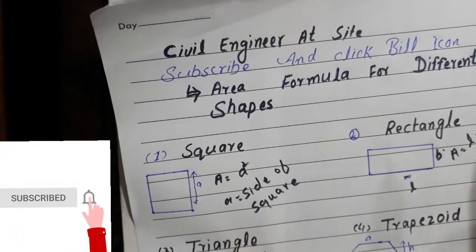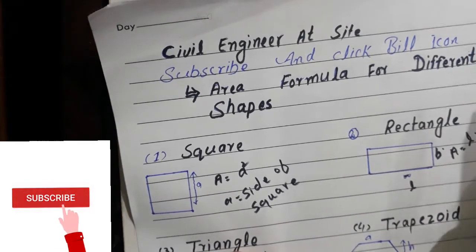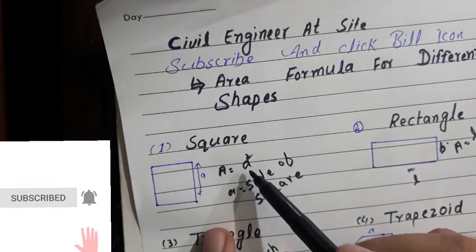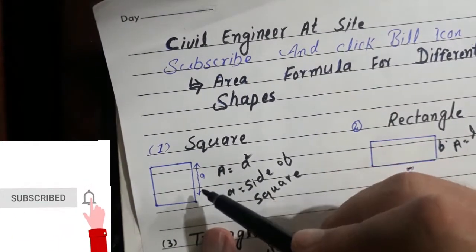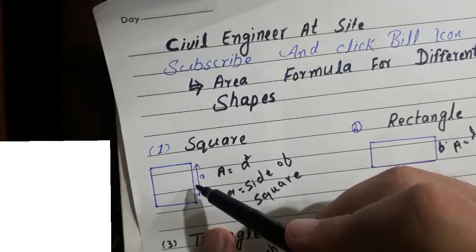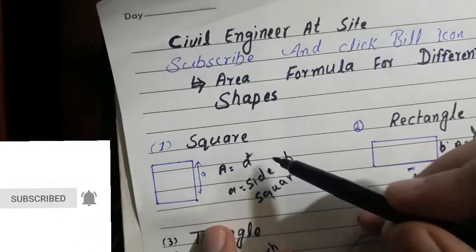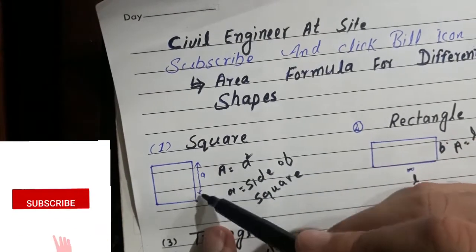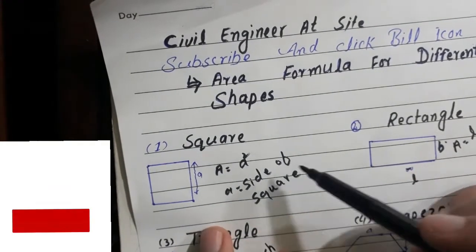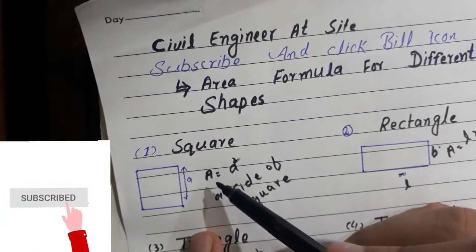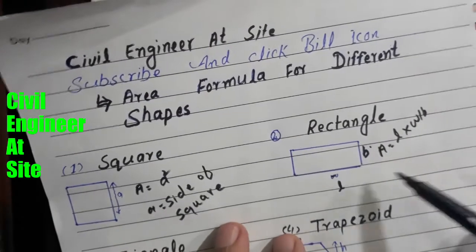Here we will discuss the formula for different shape areas. The formula for the square is A = a², where a is the side of the square. You know that a square has all sides the same — it means side multiplied by side equals the area of the square. All four sides are equal, so the formula for the square is A = a².